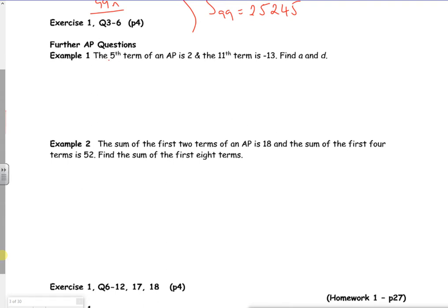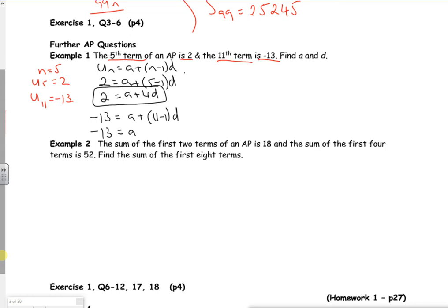Okay. So it tells me that the fifth term. So N is 5. U5 is 2. And the 11th term. So for N is 11. U11 is minus 13. U11 is minus 13. Alright. So I can set up two equations. Both of these are with terms. So both of these are using this formula. So 2 is A plus 5 minus 1 D. So 2 is A plus 4 D. So that's one equation you can use. Then I've got minus 13 is A plus 11 minus 1 D. So minus 13 is A plus 10 D.